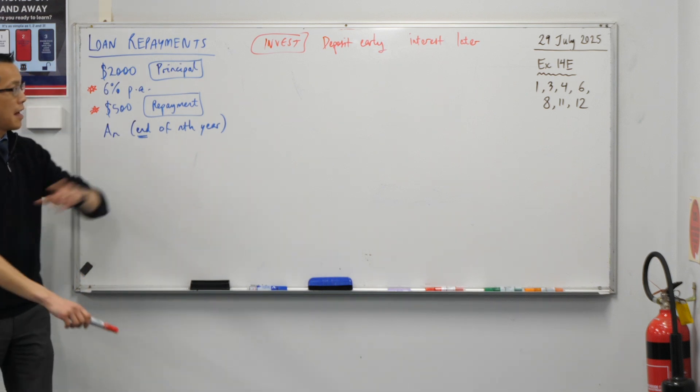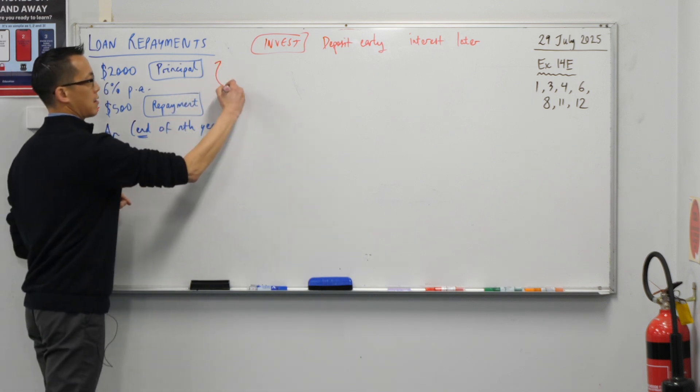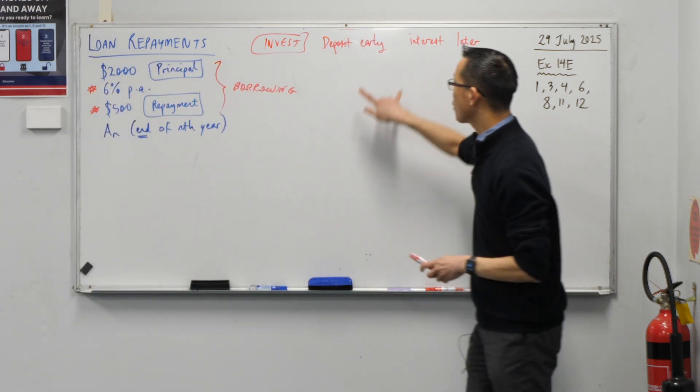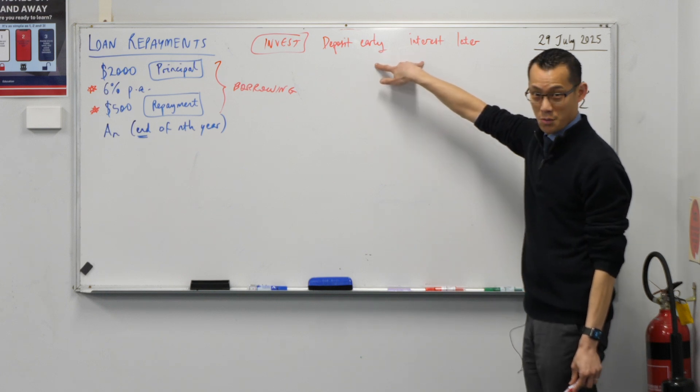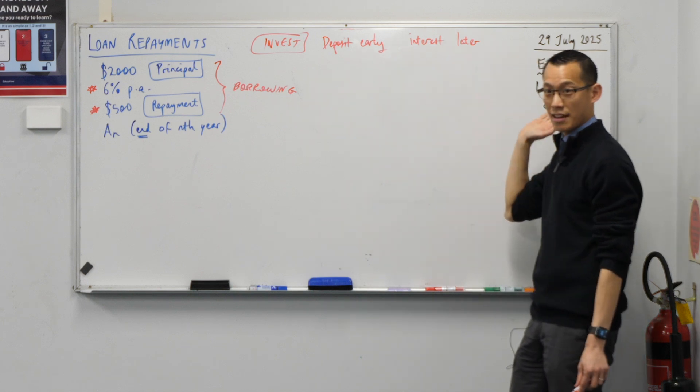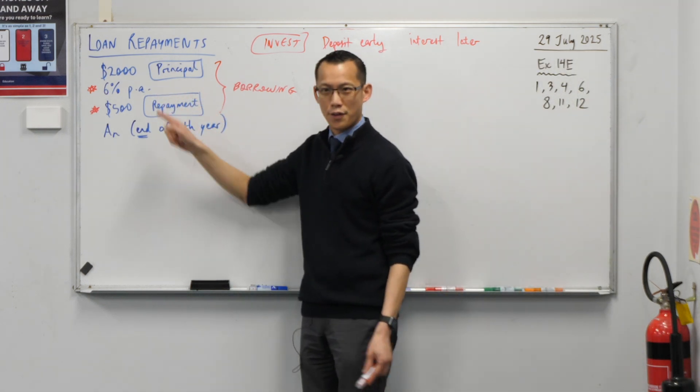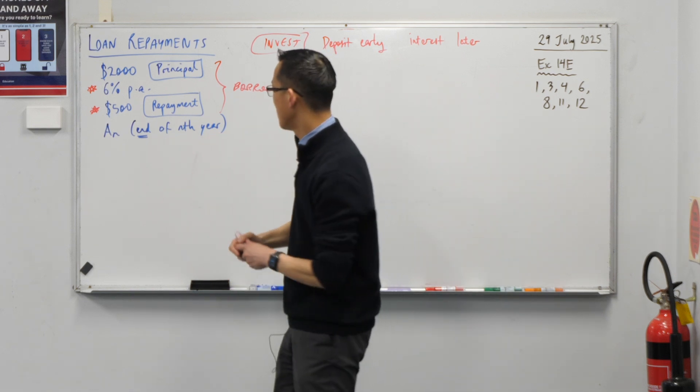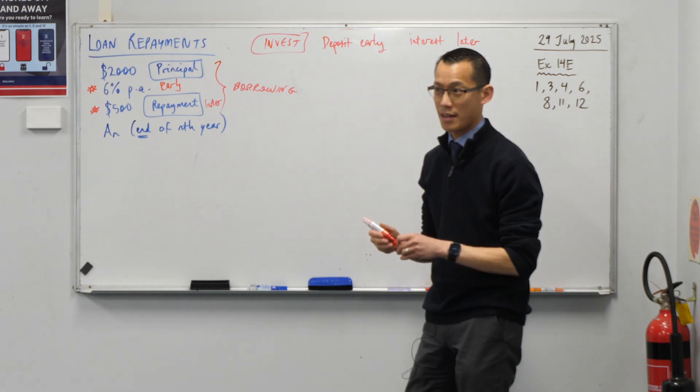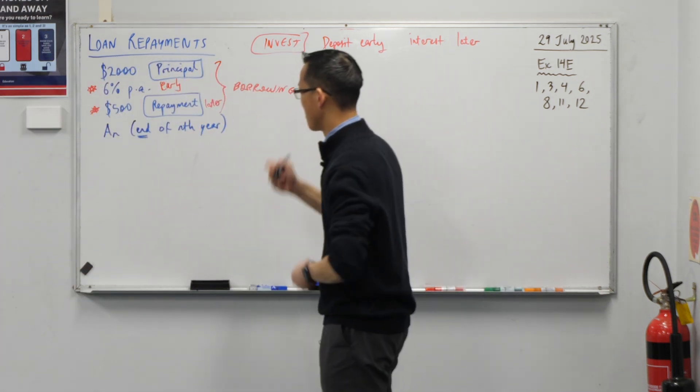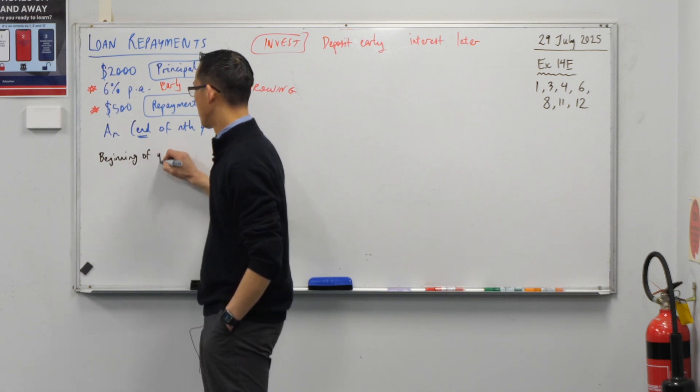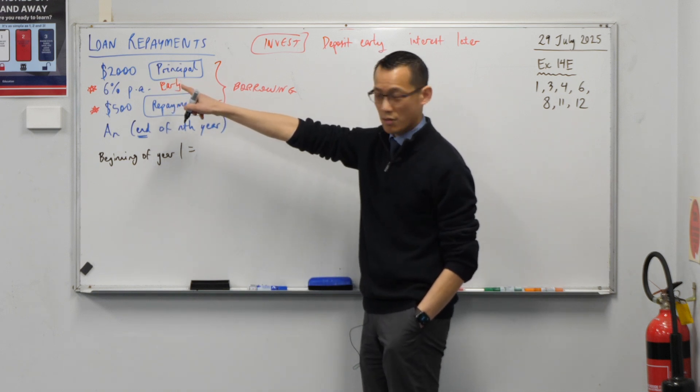But right now we are borrowing. Imagine you're the bank and thinking about what makes this most advantageous to you. Do you think you're going to do it in this order? No, you're going to do it in reverse. Interest in a borrowing situation is better for the person who's lending, so they're gonna charge you interest right away. So this happens early and this happens later. This is really important for how we set up our equations. Here's our setup: at the beginning of the year, because the interest happens first, we start with the principal—we already said that's 2000—and then the interest goes on right away.